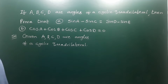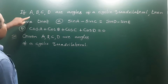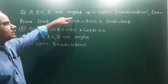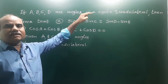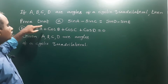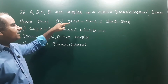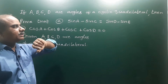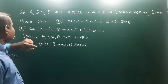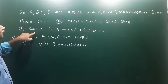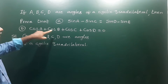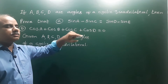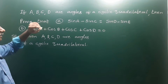If A, B, C, D are angles of a cyclic quadrilateral, prove that: (1) sin A minus sin C is equal to sin D minus sin B, and (2) cos A plus cos B plus cos C plus cos D is equal to zero. We have to prove these two results.